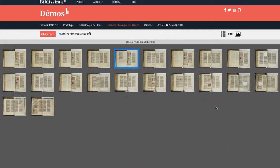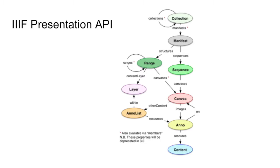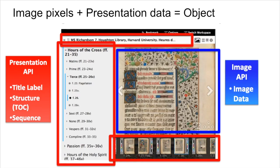The IIIF Presentation API leverages linked data, existing web architecture, and the Shared Canvas data model to describe information about an object, as represented in a JSON-LD document referred to as a IIIF manifest. Within the Shared Canvas data model, a manifest represents a physical object like a book or a newspaper. Multiple manifests comprise a collection, and objects containing multiple pages or parts are comprised of sequences of canvases, each containing specific content represented as annotations within the JSON-LD manifest.